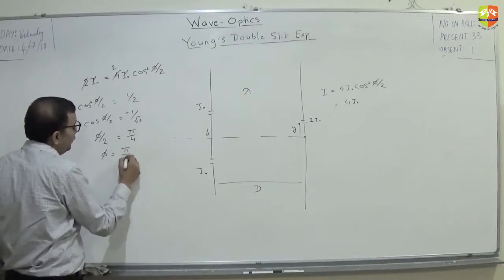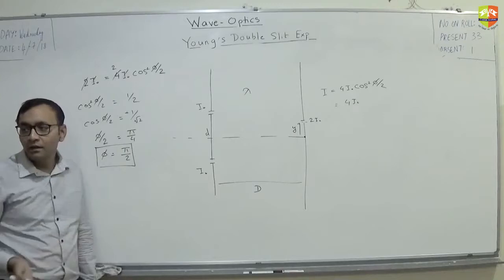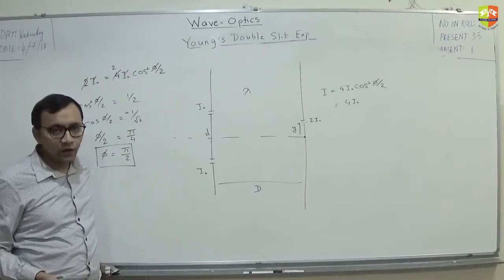Phi by 2 will be what? Pi by 4. So, phi will be? Pi by 2. So, basically I need to find out location where phase difference is pi by 2.